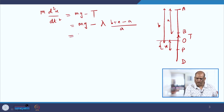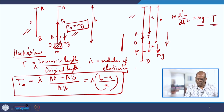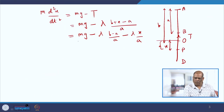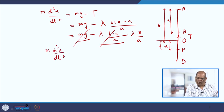Since T0 = Mg = lambda(B − A)/A from the equilibrium condition, these terms cancel. You are left with M d²x/dt² = −λX/A·M, which simplifies to d²x/dt² = −(λ/AM)·x.